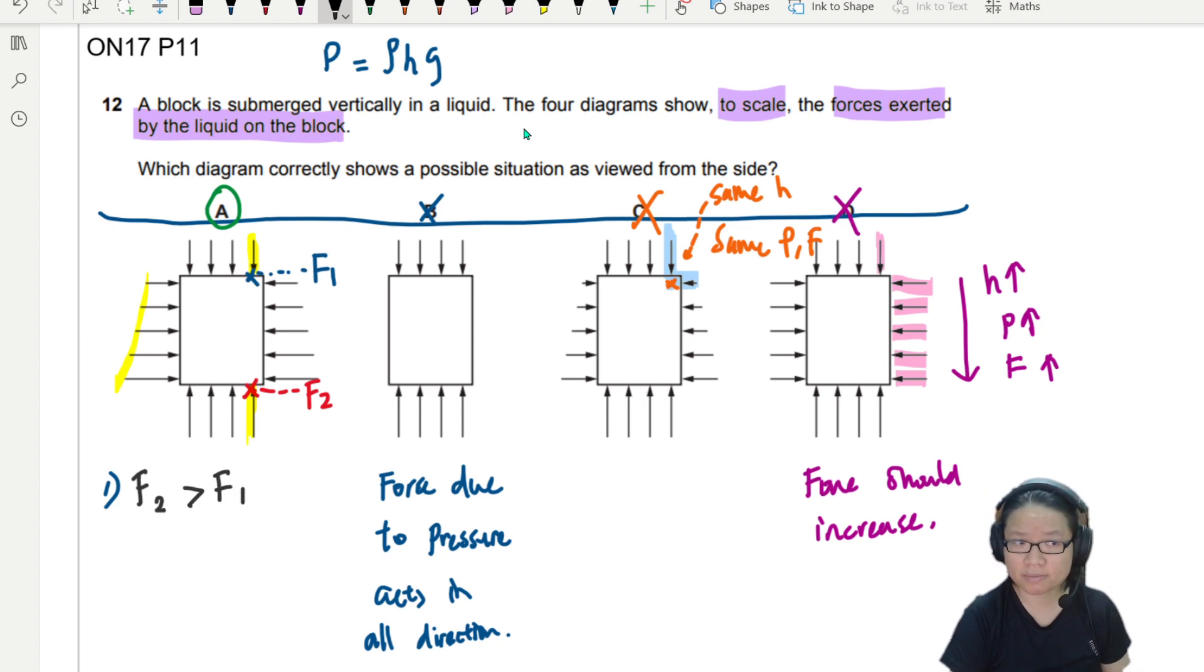So the first key point to note here is the pressure at the bottom surface is bigger than the pressure at the top surface. This causes a net force upwards. What do we call this net force? Uptrust. All right.